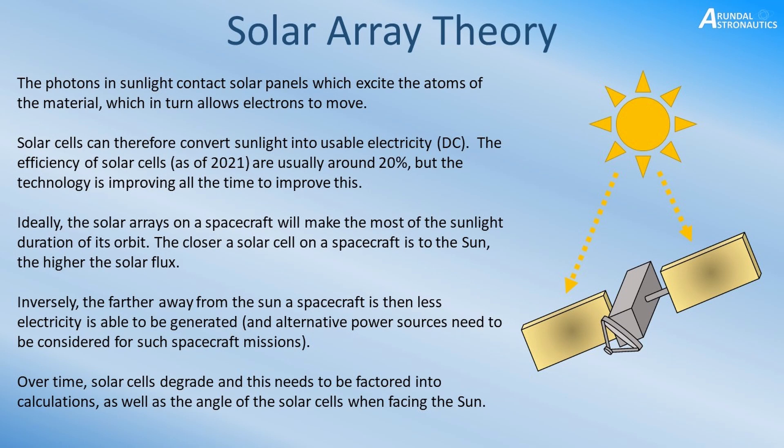The final calculation we're going to consider in this tutorial is the fact that solar cells will degrade over time, so depending on the duration of a mission we can factor that in. We also consider the angle of the solar cells and their orientation towards the sun — you may have noticed that on many spacecraft systems solar arrays have motors that allow them to change orientation so they can ensure they face the sun at an optimal angle. So with all that, let's move on to the next slide.